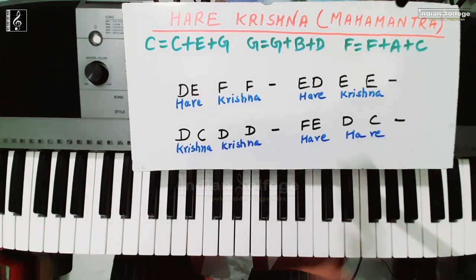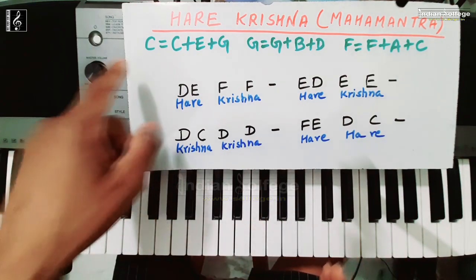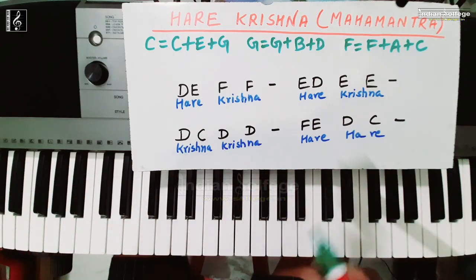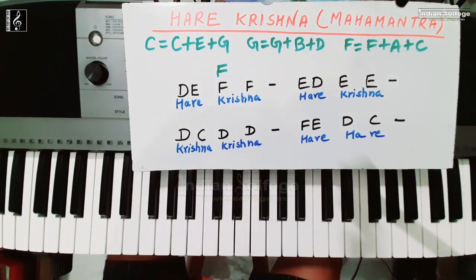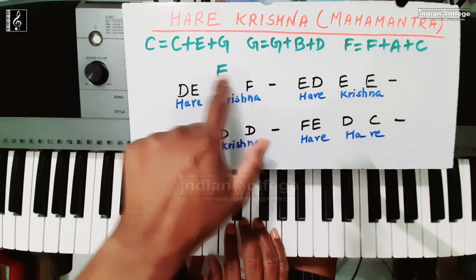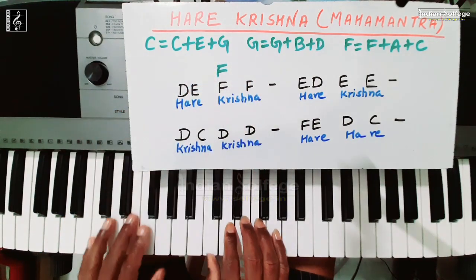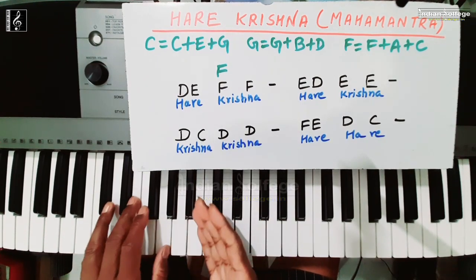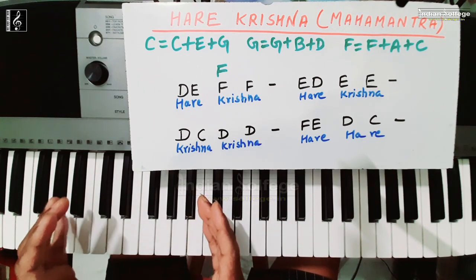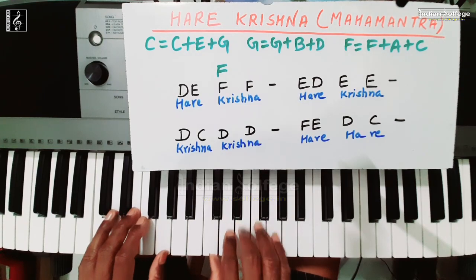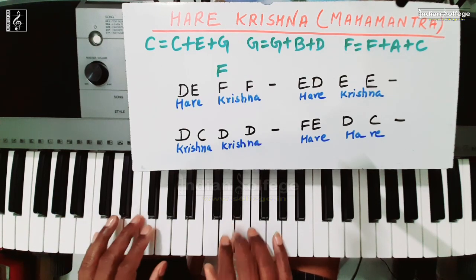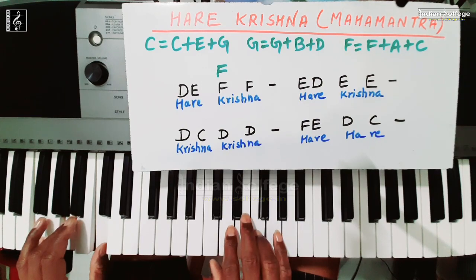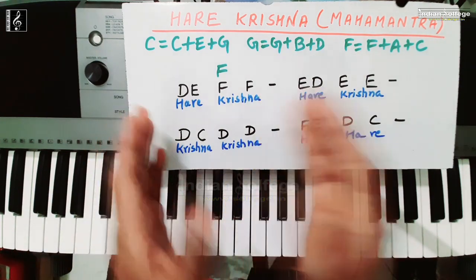Chord का order song में कुछ भी हो सकता है — जरूरी नहीं कि C G F के इसी order में होगा। हमारी first line में chord लगेगा F के ऊपर — यानि D E F F में, F note पर F chord बजाना है और left hand से chord बजाना है। So: D E F F — play again: D E F F।